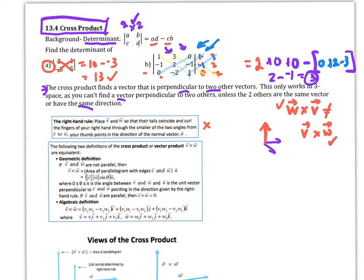There are two definitions for the cross product. One is the geometric definition: it's the area of the parallelogram whose edges are V and W. So I take V and W and I want to find the cross product — really what we're doing is finding the area of this parallelogram. That cross product is also going to give us the length of the normal vector. The cross product is this vector, but the cross product magnitude gives me the area of the parallelogram. They're the same thing.